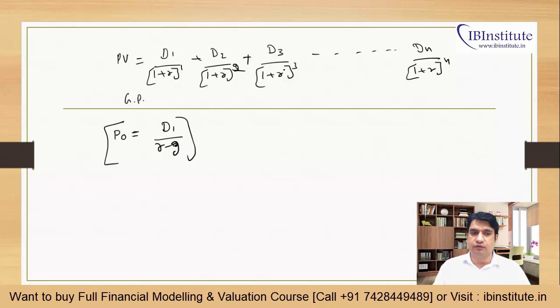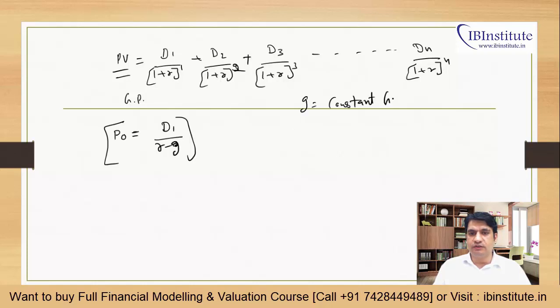The concept is: find the present value of all future perpetual cash flows, and that becomes the company's value. This formula has one key condition — G, the growth rate, must be constant. If the assumption of constant growth is not met, then this formula will not work.